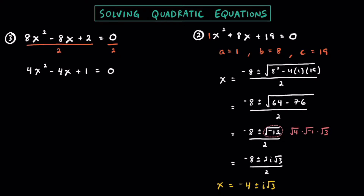I don't think this one is necessarily going to be factorable... actually, maybe it is. I'm thinking that if we just look at the factors here, let's do 2x and 2x. We have a minus 4x in the middle, so I'm thinking about using maybe a minus 1 and a minus 1. If I multiply these across, that's negative 2x, and multiplying across the other way that's also negative 2x. Combine those and that's negative 4x.